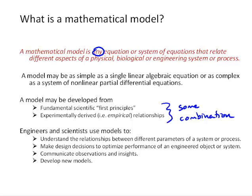Engineers and scientists use models for the following. They use them to understand the relationships between different parameters of a system or a process. They also use them to make design decisions to optimize the performance of an engineered object or system. Models are also useful to communicate observations and insights to other people working in your same discipline or scientific community. And we use those to develop and test new models that might give better results or more accurate predictions.